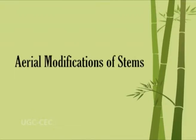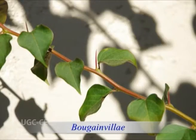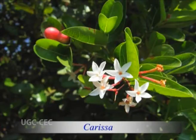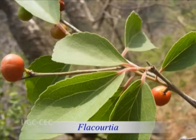In some plants, the shoot system gets modified to perform special functions. Aerial modifications of stems include stem tendrils for climbing, thorns for protection, phylloclade for food manufacture, and bulbils for vegetative propagation. The axillary shoots get modified into thorns — for example, in Bougainvillea, Punica granatum, and Duranta. In Carissa, the terminal bud is modified into a pair of thorns. The thorns sometimes bear leaves, flowers, and fruits as in Duranta and Prunus, and sometimes become branched as in Flacourtia.